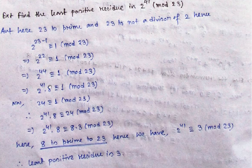Because what we want here is 2 to the power 41. So we need to remove the 8. Now, if we divide 24 by 23, the remainder is 1 — that is the obvious case.